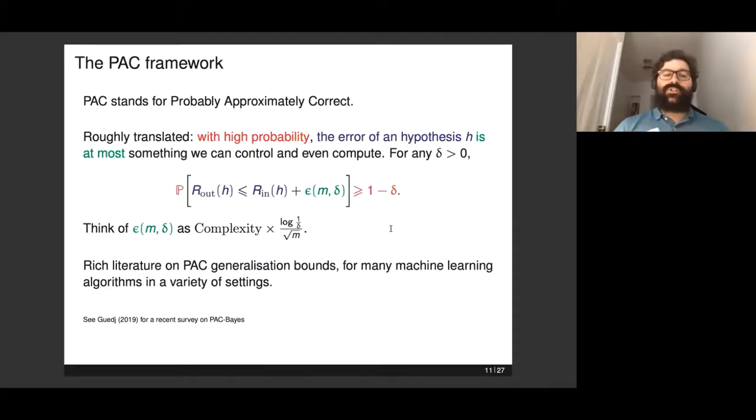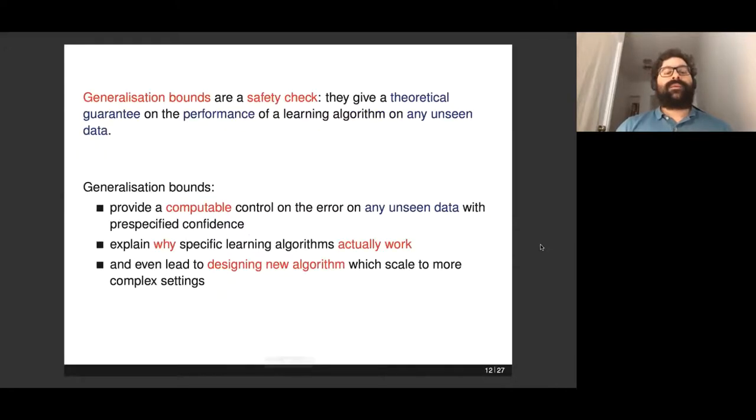There's a very rich literature on those bounds, and in particular there's a subcategory called PAC-Bayes. If you're interested in that, you're welcome to have a look at this recent survey I've written last year. It also serves as a backbone to the ICML 2019 tutorial I was mentioning earlier.